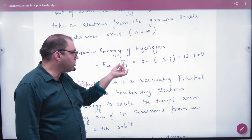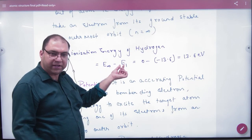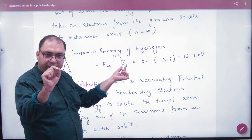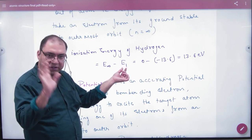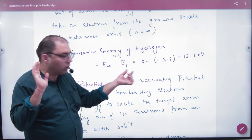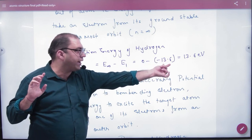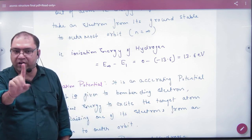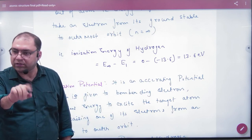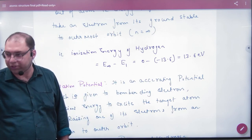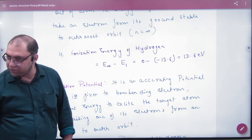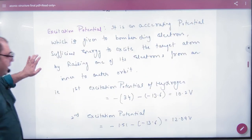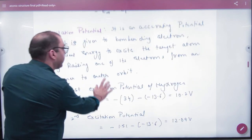The final energy is 0, and what was the initial? For n equal to 1, it is minus 13.6 by 1 squared. So what is the ionization energy for hydrogen at n equal to 1? It is 13.6 electron volt. Next is excitation potential.